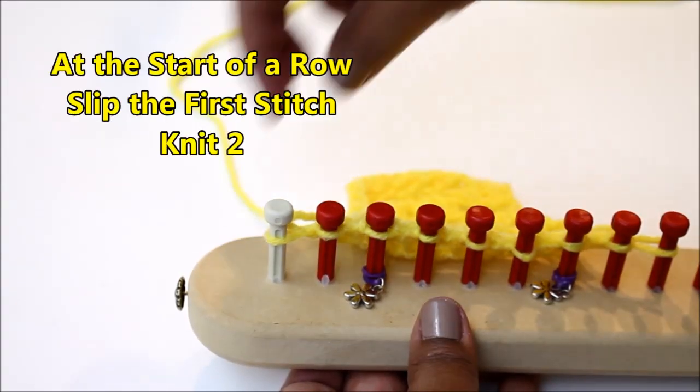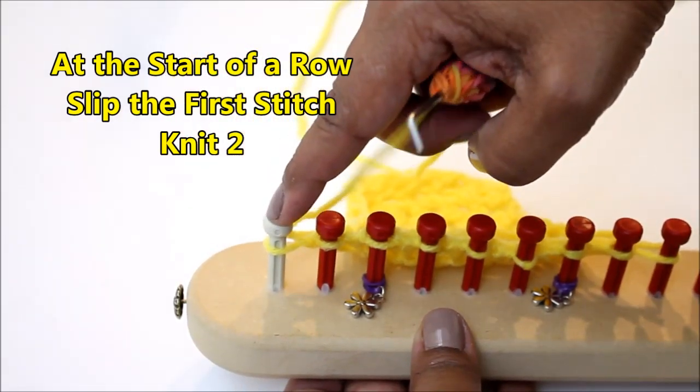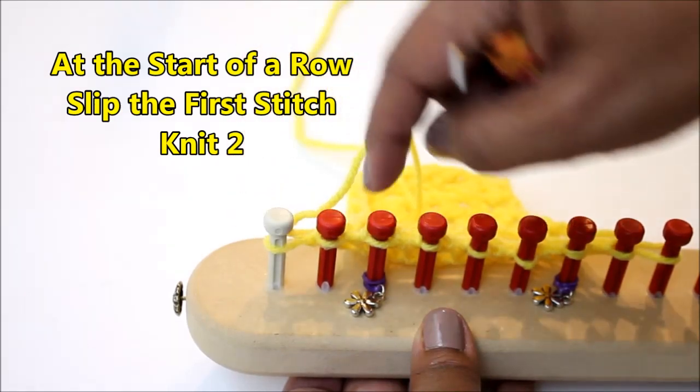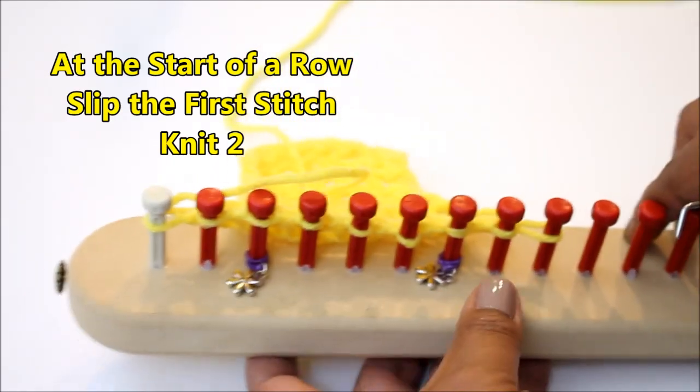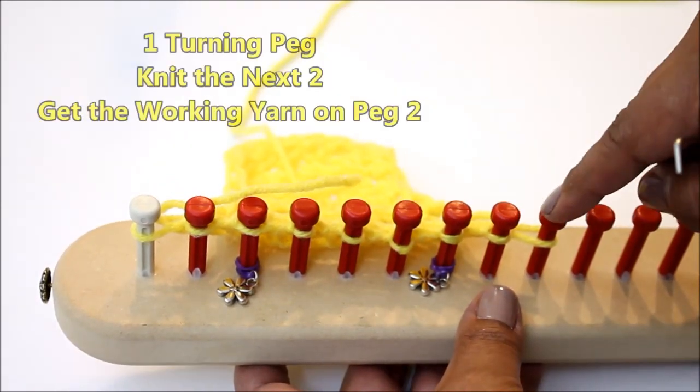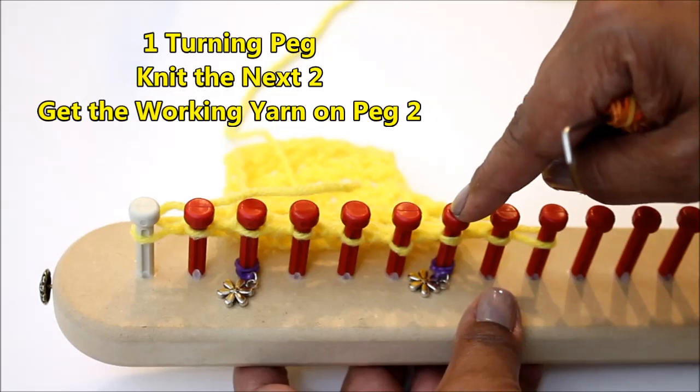I start the row by skipping the first peg. This one that's right here and I won't start the stitch pattern on either one of these. I have to start it here. I do the same thing on the other side. I slip the first one, I knit that next one and that's where I start the stitch pattern, right there.